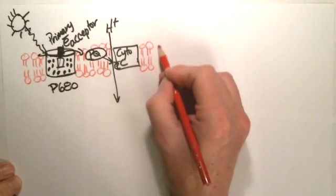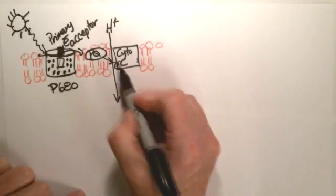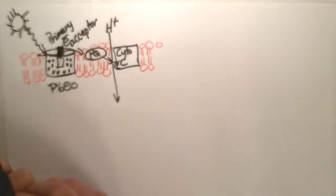So as we go through this process here, just remember that it's found inside a membrane. Now, this plastoquinone has dropped off its electron to cytochrome C.